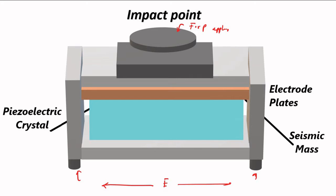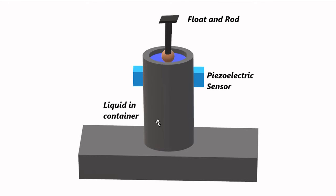Now, how can we use it for level measurement? The basic principle is that we have a container with liquid at a certain level. To sense the liquid level, we place a float and attach a rod with a specific design so that when it moves up and down, its ends strike the impact point of the piezoelectric sensor. When it strikes the impact point, these sensors are triggered and give us a voltage output — a signal indicating the float's current position, which gives us information about the liquid level.